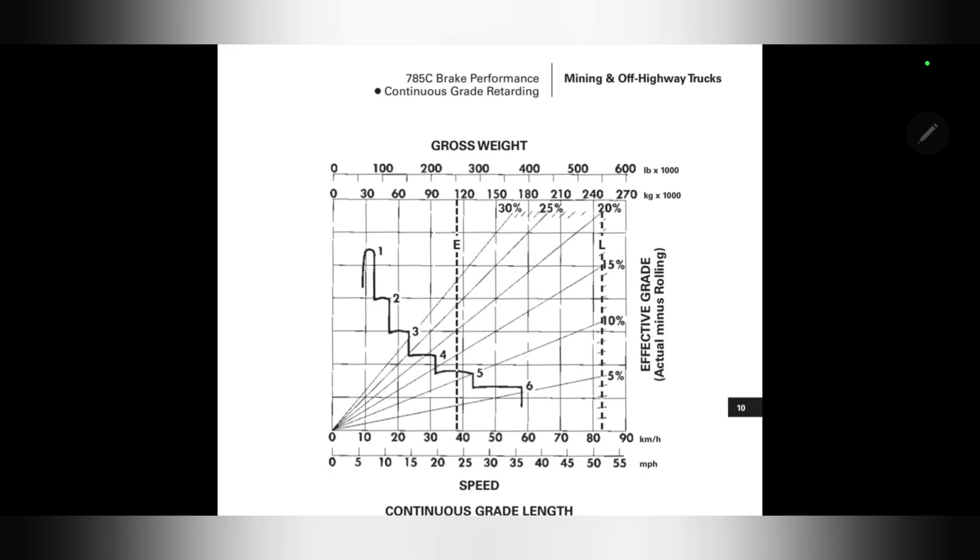Like before, we take this retard curve from the manufacturer's handbook. We're travelling downhill, so we can calculate that the effective grade is 8 minus 2, which equals 6%. So here is 6%.